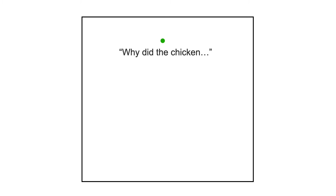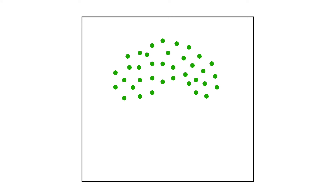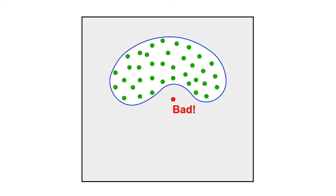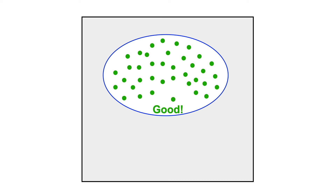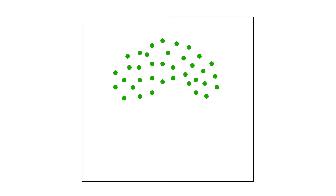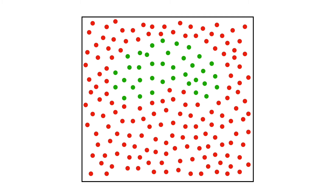Suppose that this box represents the space of all jokes — each point here is a joke. Say you have a training set of good jokes, and your task is to classify a new joke as good or bad. A machine learning algorithm will do this by defining a boundary between good and bad. But where should we draw this boundary? It's hard to know for sure. A better approach is to train not just on good jokes but on bad ones too, and then fit a boundary that separates good from bad.